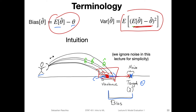In practice there's also some noise, but for simplicity in this lecture we are ignoring the noise. The noise would be about the target — the target could also be a little bit uncertain — but we'll ignore that in the following slides to keep things simpler.